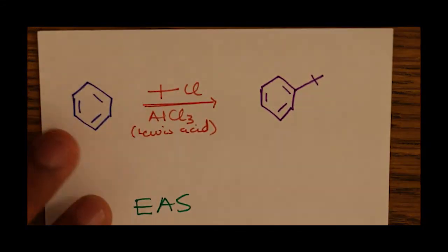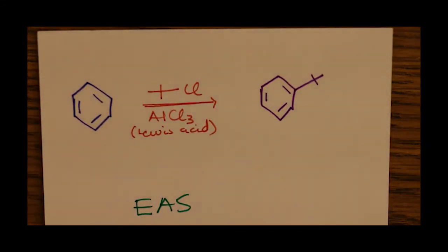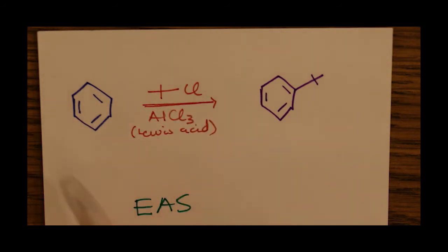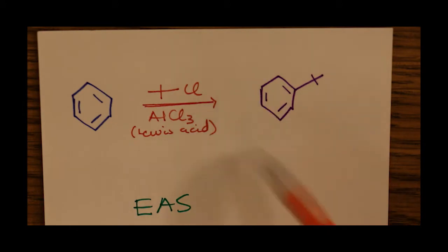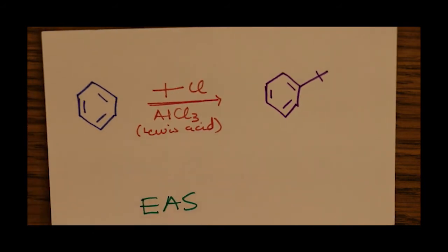Our next form of electrophilic aromatic substitution is called the Friedel-Crafts reaction, which takes place in the presence of a Lewis acid — in this case, aluminum chloride — where a tert-butyl chloride adds to a benzene ring. The tert-butyl group becomes the electrophile and gets substituted on the ring in the product. This is the famous Friedel-Crafts reaction, an example of EAS.